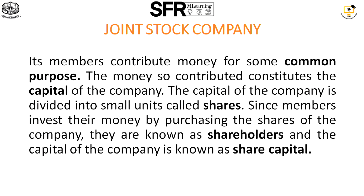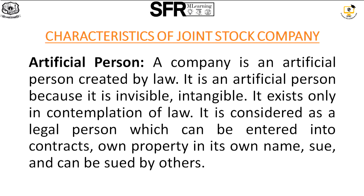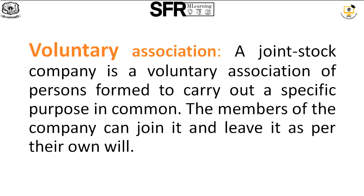Now we can discuss the characteristics of the joint stock company. The first characteristic is that a company is an artificial person. A company is an artificial person created by law — it is invisible and intangible. It is considered a legal person which can enter into contracts, own property in its own name, sue and can be sued by others.